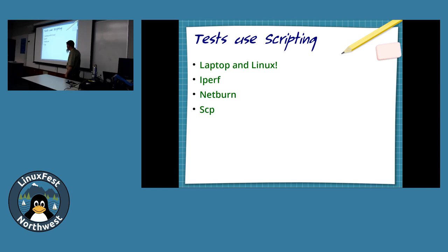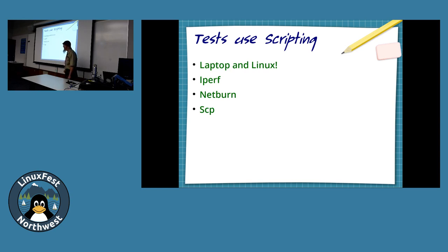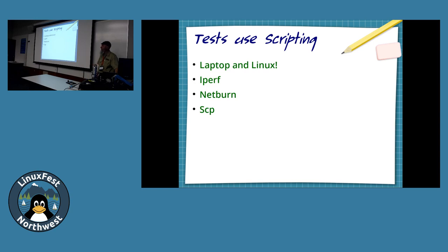For repeated testing, you're probably looking at using just a few tools and writing a script. Your laptop, wireless card, and Linux make you perfectly prepared to do this in almost any setting. You have iPerf, Jim Salter's Netburn — another interesting traffic generator — and you can even use SCP to copy files, because SCP has a nice status bar that tells you your bit rate. It's the least amount of effort to script.